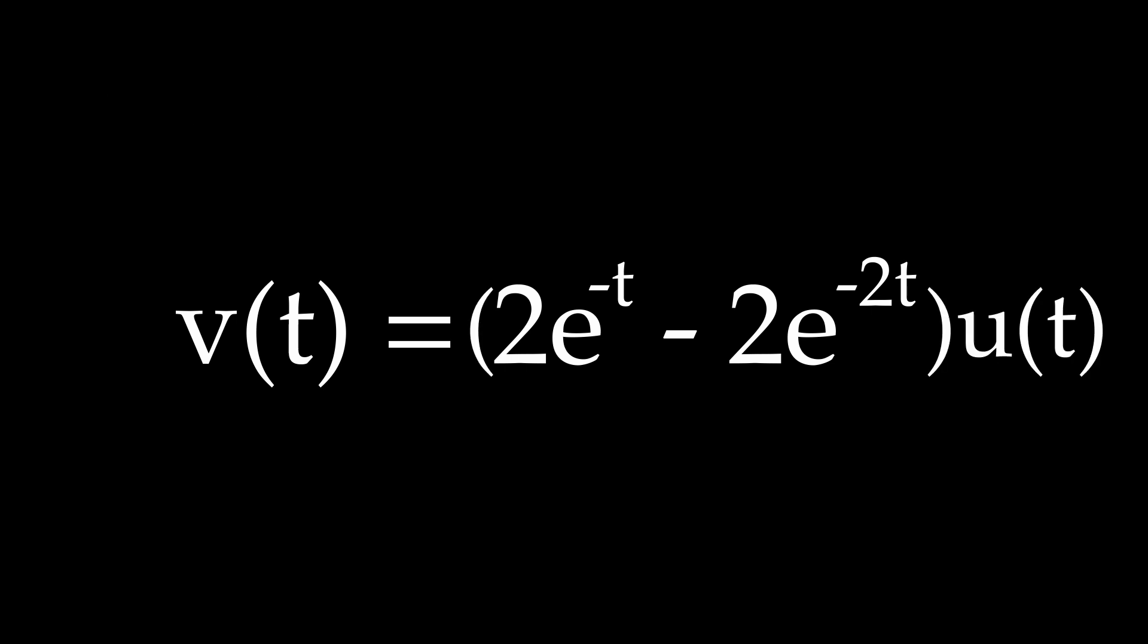So here we have it, 0 before t equals 0, and this after. To say that it starts at t equals 0, we multiply it by u of t, the unit step function.